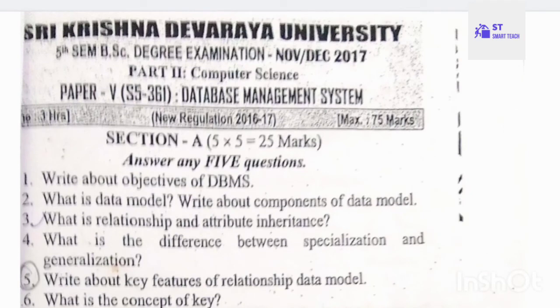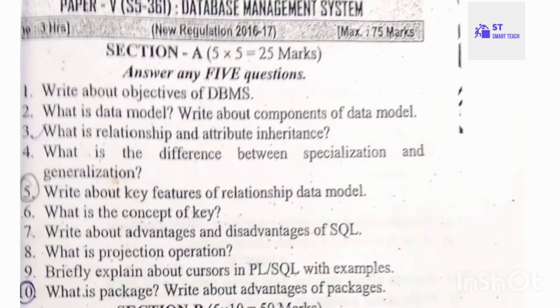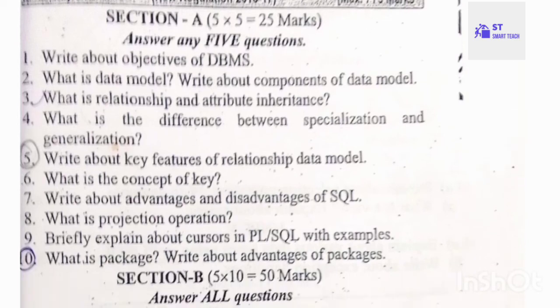Next is the 2017 SK University fifth semester DBMS question paper. Part A questions: write about objectives of DBMS; what is a data model — write about components of a data model; what is relationship and attribute inheritance; what is the difference between specialization and generalization; write about key features of relational data model; what is the concept of a key; write about advantages and disadvantages of SQL; what is a projection operation.